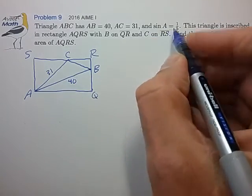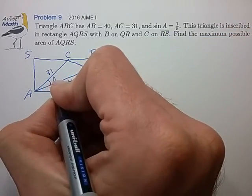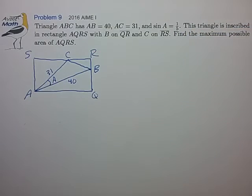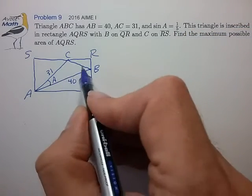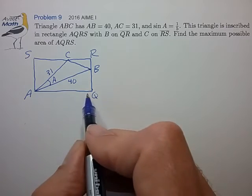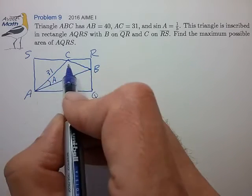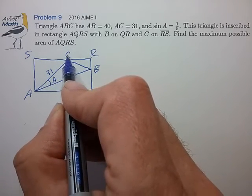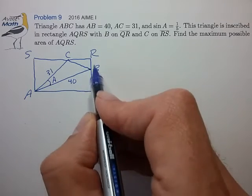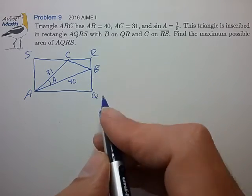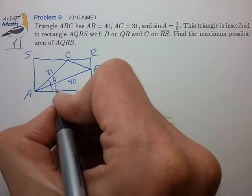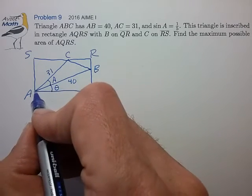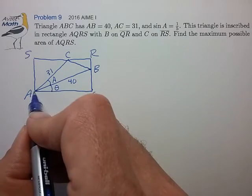And that the sine of angle A is 1/5. So we can see that as this triangle rotates inside of AQRS while maintaining point C on SR and point B on RQ, we can visualize this with a tilt angle theta of AB relative to AQ.